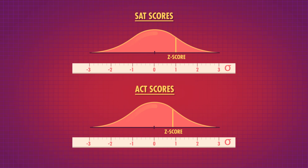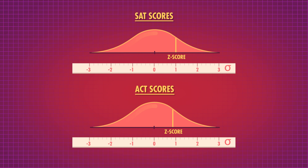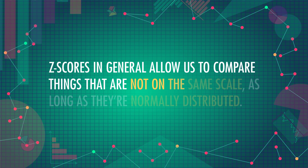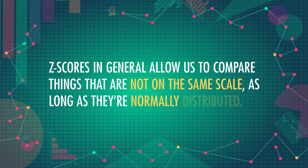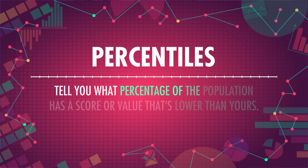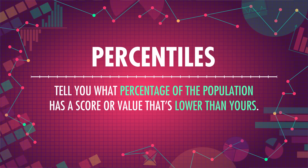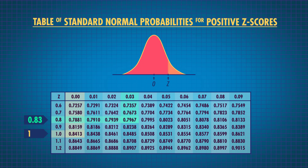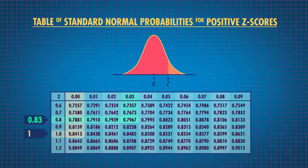These scores are much more comparable. It's easy to see that Tony and Maya's z-scores are actually pretty similar, even though it was hard to tell with their original scores of 1200 and 25. Z-scores in general allow us to compare things that are not on the same scale, as long as they're normally distributed. In fact, there's an entire z-distribution that allows us to calculate things like percentiles. Percentiles tell you what percentage of the population has a score or value that's lower than yours. The median is the 50th percentile — exactly half the data is above and below it. By looking up Tony and Maya's z-scores in a standardized z-table, we can see that both scored above approximately 80% of their peers, give or take.